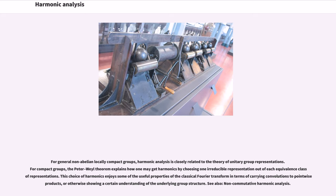For compact groups, the Peter-Weyl theorem explains how one may get harmonics by choosing one irreducible representation out of each equivalence class of representations. This choice of harmonics enjoys some of the useful properties of the classical Fourier transform in terms of carrying convolutions to pointwise products, or otherwise showing a certain understanding of the underlying group structure. See also, non-commutative harmonic analysis.